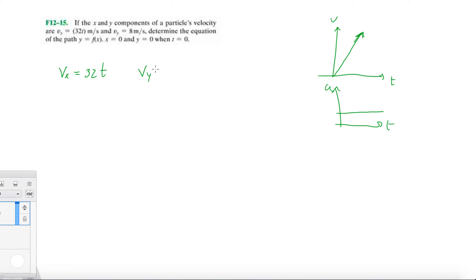And then here we have the y component of the velocity, and it's just constant. So for y, we have a constant 8 meters per second, and then 0 acceleration because it's going at constant speed.